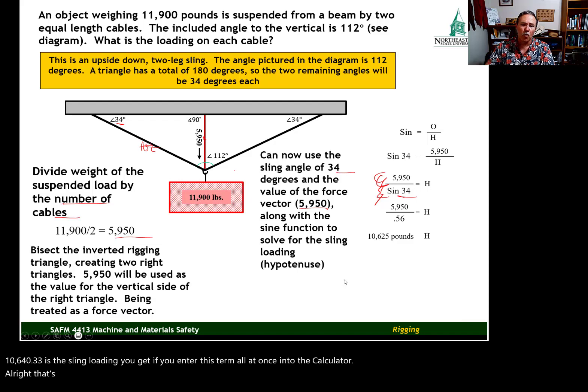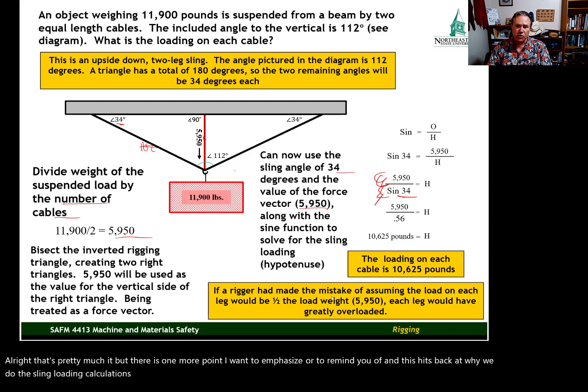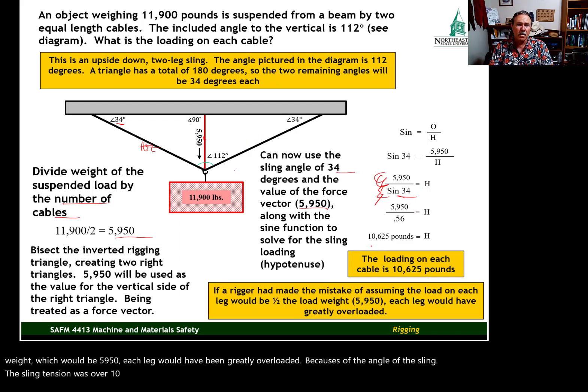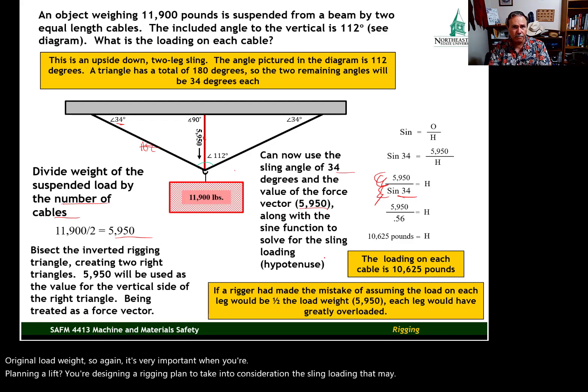That's pretty much it, but there is one more point I want to emphasize. This hits back at why we do these sling loading calculations. If a rigger had made the mistake of assuming the load on each leg would be one half the load weight, which would be 5,950, each leg would have been greatly overloaded. Because of the angle of the sling, the sling tension was over 10,600 pounds. The sling loading was almost double half of the load weight, or it was almost equal to the original load weight. So it's very important when you're planning a lift, you're designing a rigging plan to take into consideration the sling loading that may be in effect.